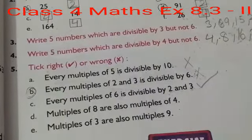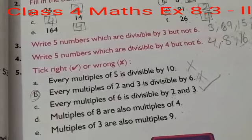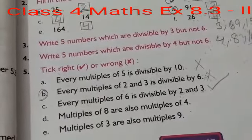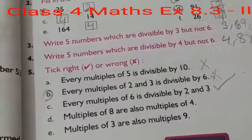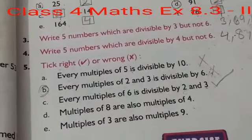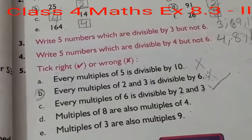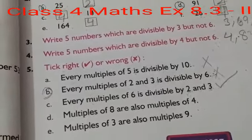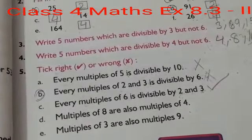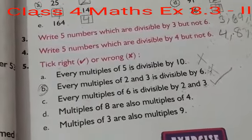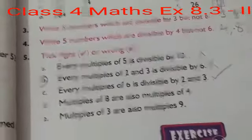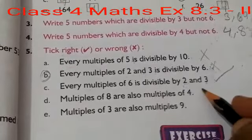Multiples of 8 are also multiples of 4. Yes, multiples of 8 are also multiples of 4. Just like: 8 1's are 8, and 4 2's are 8. 8 2's are 16, and 4 4's are 16. 8 3's are 24, and 6 4's are 24. So, every multiple of 8 is also a multiple of 4.